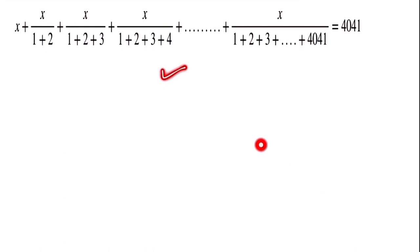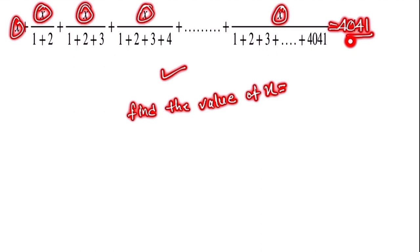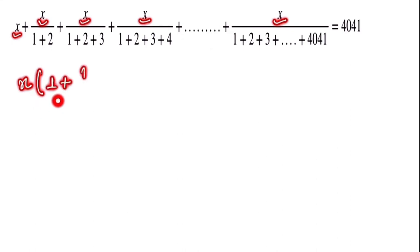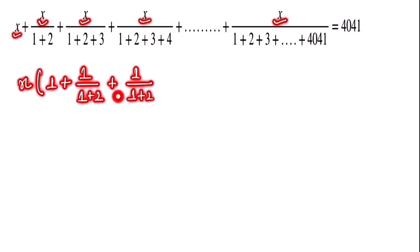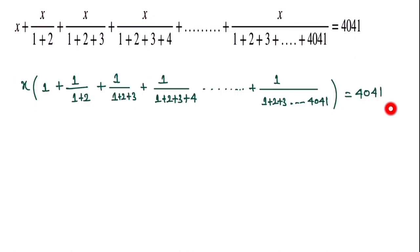In this question we have to find the value of x. To equate the equation, we notice that x is present in all of the terms. So we take x as common, giving us: x times (1 + 1/(1+2) + 1/(1+2+3) + ... + 1/(1+2+3+...+4041)) = 4041.